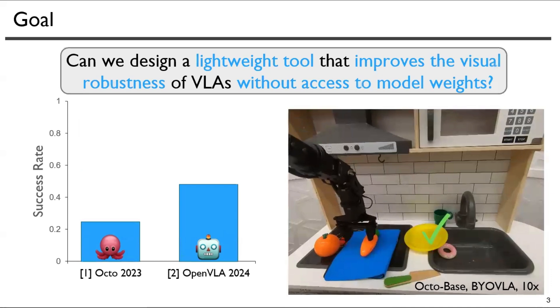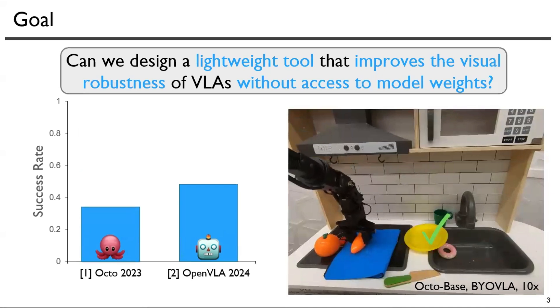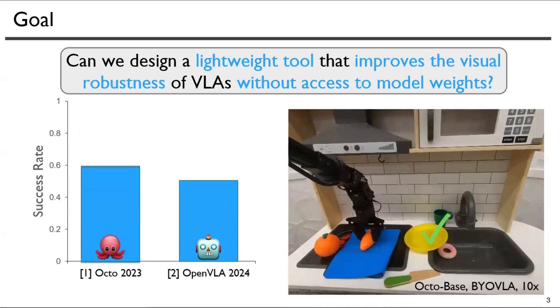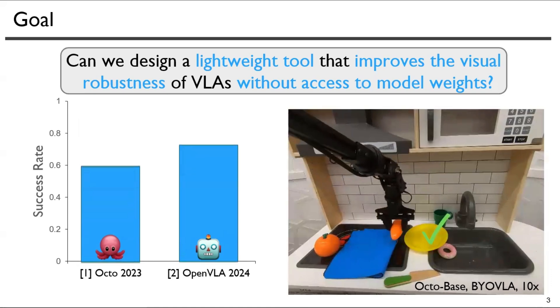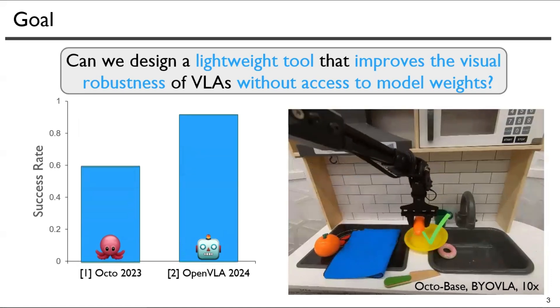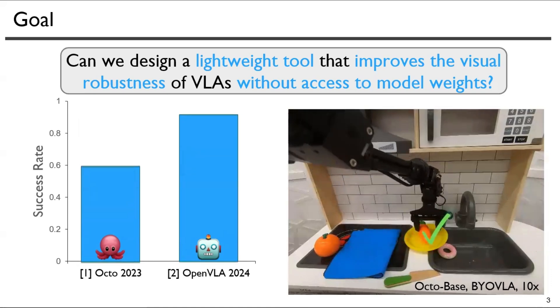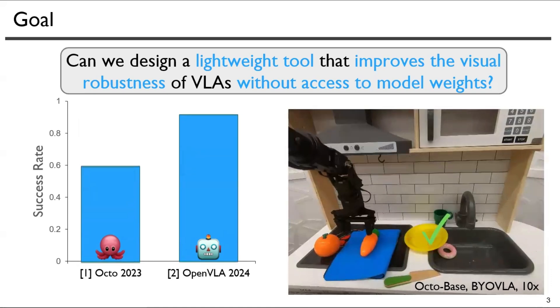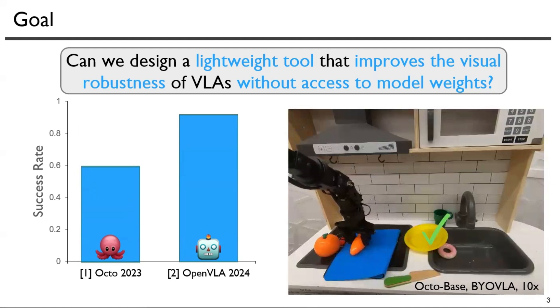This motivates us to ask the following: can we design a lightweight and model-agnostic tool that does not alter the model weights, yet still improve the robustness of a VLA in the presence of task-irrelevant distractions?